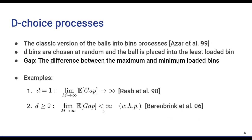A classic version of the balls into bins is the D choice process, where D bins are chosen uniformly at random and the ball is placed in the least loaded of the chosen bins. In most of these types of problems, we are interested in what we will call the gap, which is the difference between the maximum and minimum loaded bins.